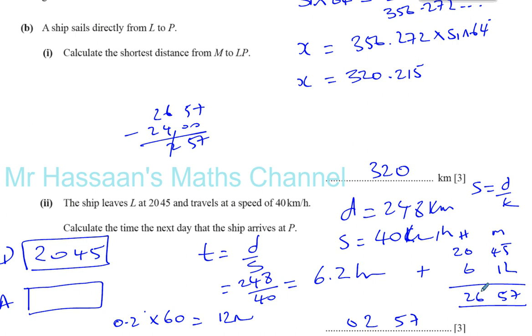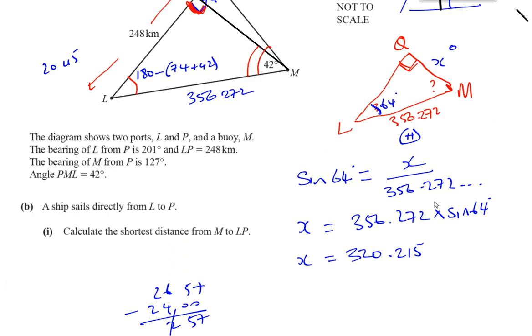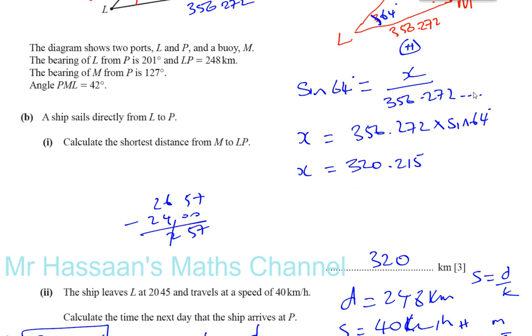So it's going to be 02:57 the next day. As they gave the time in 24-hour clock format, it's best for us to give our answer in that same way. But you can't write 26:57 because there's not 26 hours in a day. There's 24 hours in a day. That means you've gone 24 hours plus 2 hours and 57 minutes over that into the next day. So that's the end of that question, question number 8. I hope that was clear, and thank you for watching.